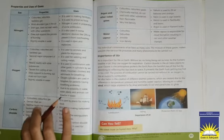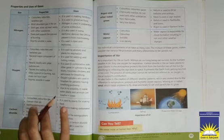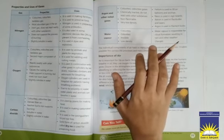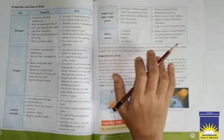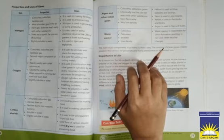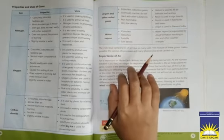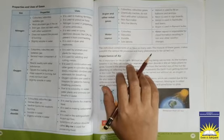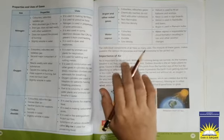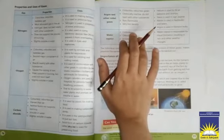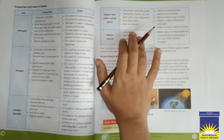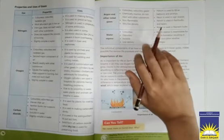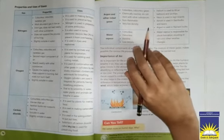Now we will discuss about argon and other noble gases: colorless, odorless gases, chemically inactive, do not react with other substances, non-flammable, very low density. So argon and other noble gases jo hai wo non-flammable hoti hai. Iska matlab hai ke un se aag nahi lagti.